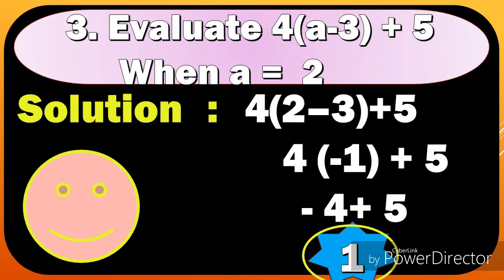We substitute the value of a. We have 4 times 2 minus 3 plus 5. Then we have 4 times negative 1 plus 5. 4 times negative 1 is negative 4 plus 5 equals positive 1.